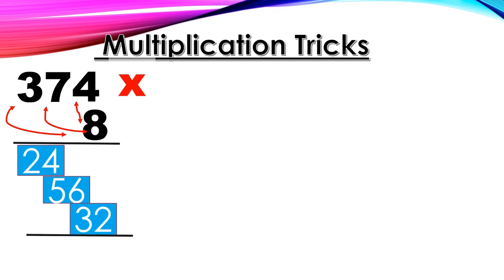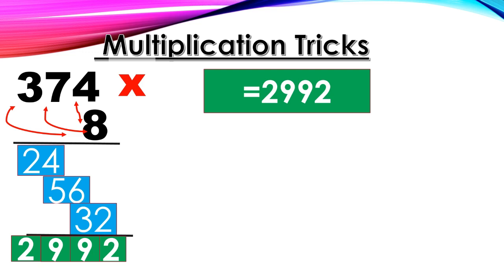Now finally, we can add all the numbers. 2, 9, 9, 2. The answer is 2,992.